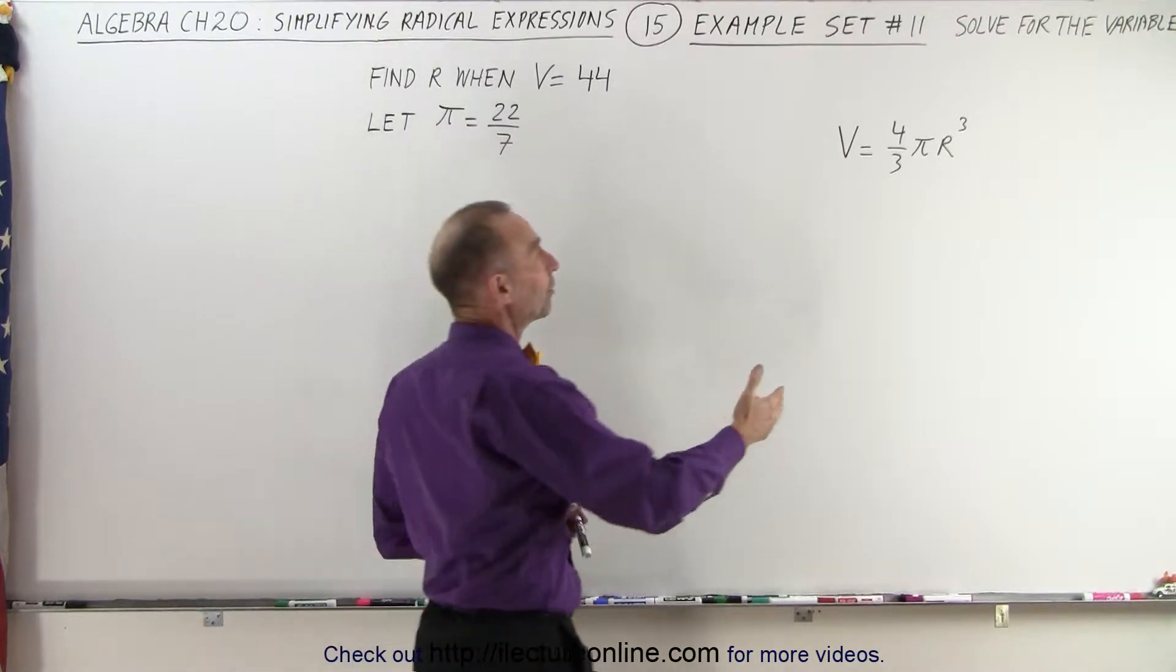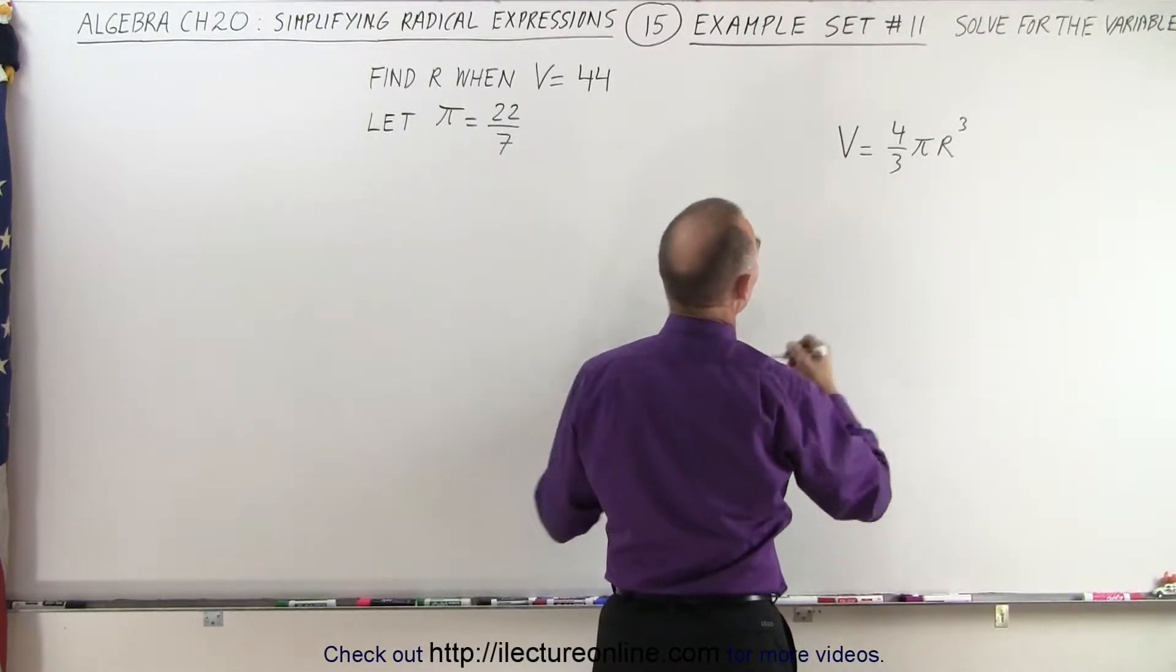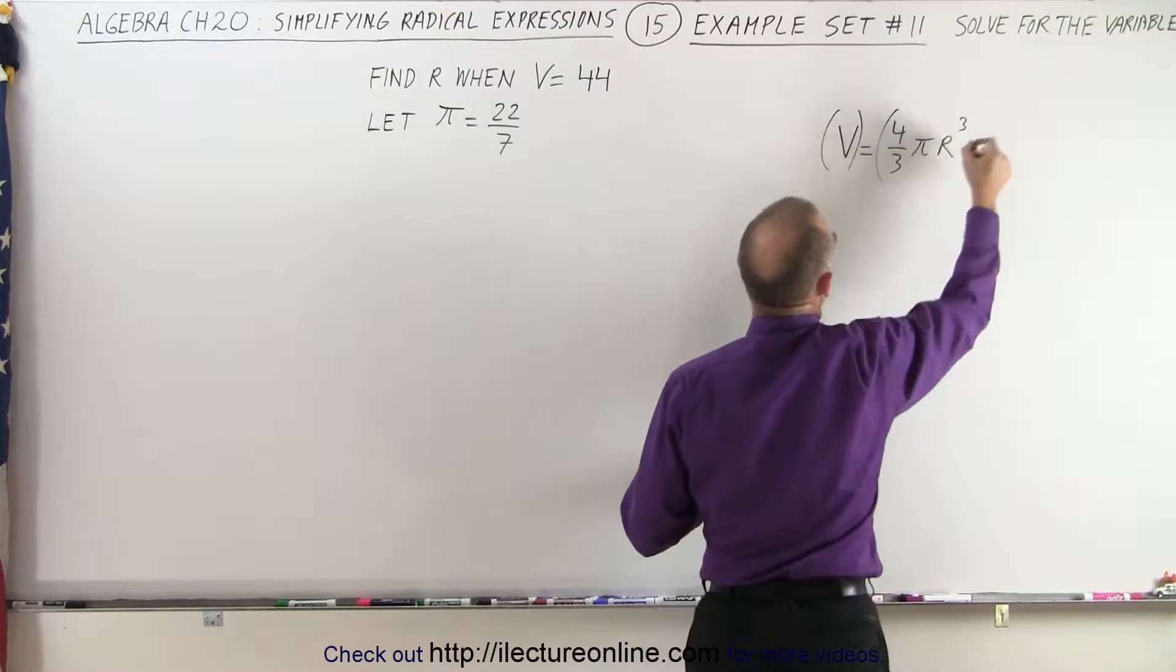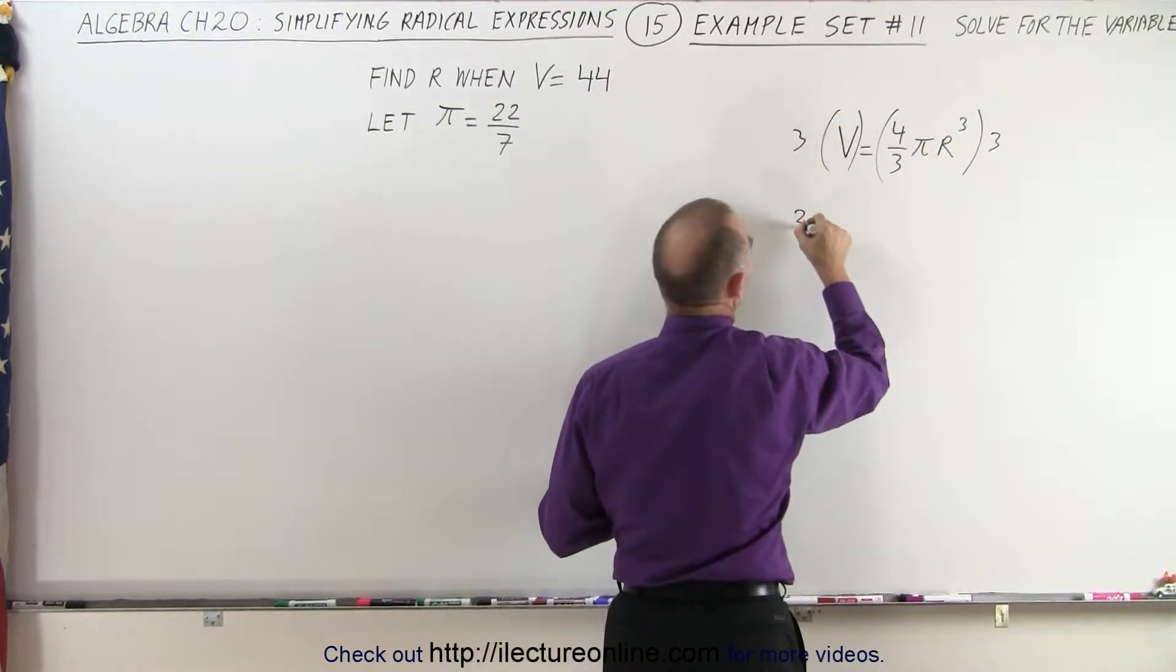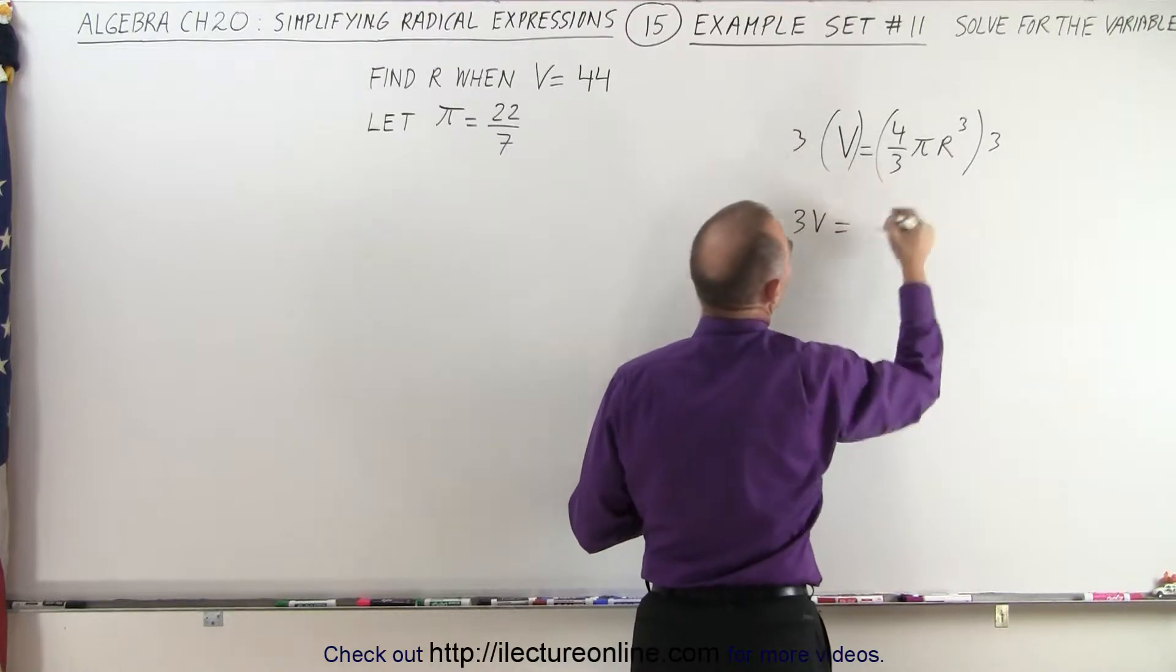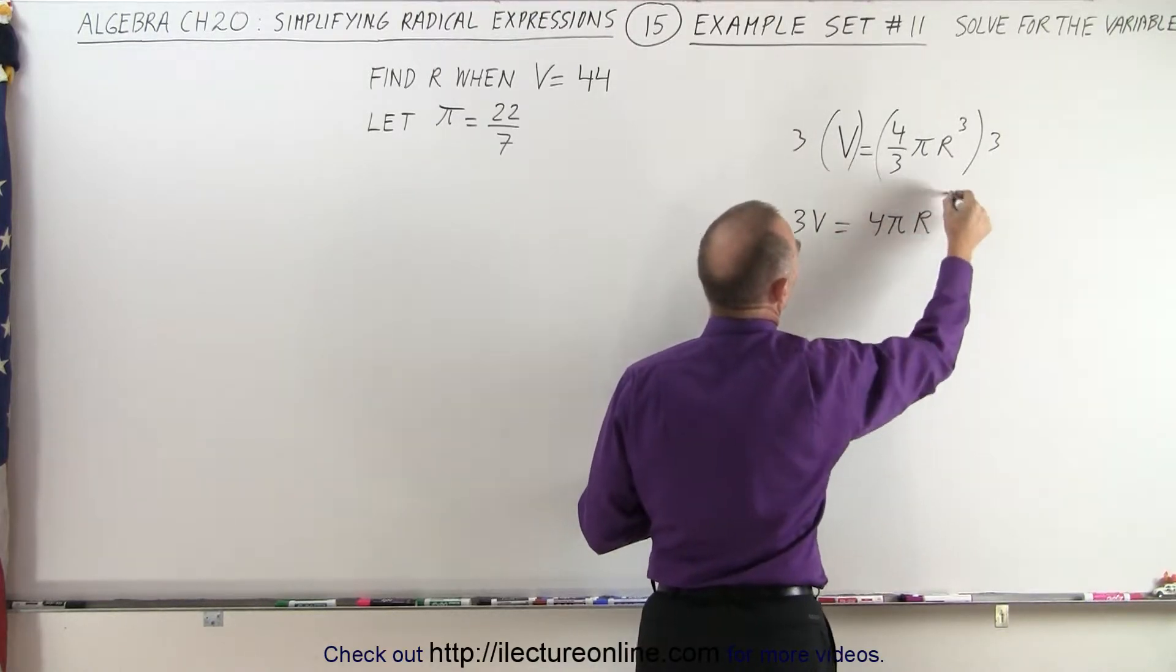So first, we need to solve this for r. So we're going to multiply both sides of the equation by 3 to get rid of the fraction. So this is 3 times 3 times 3. So we get 3v is equal to the 3's cancel, 4 pi r cubed.